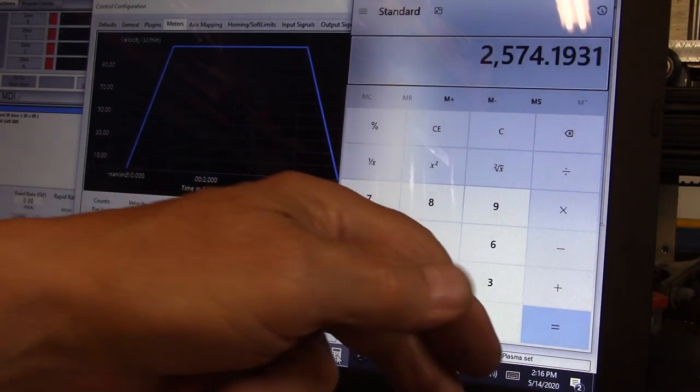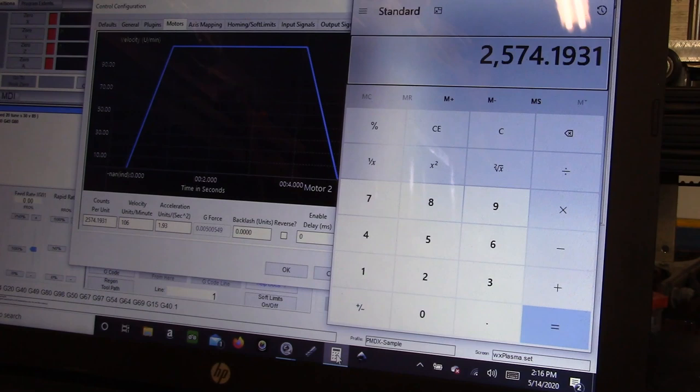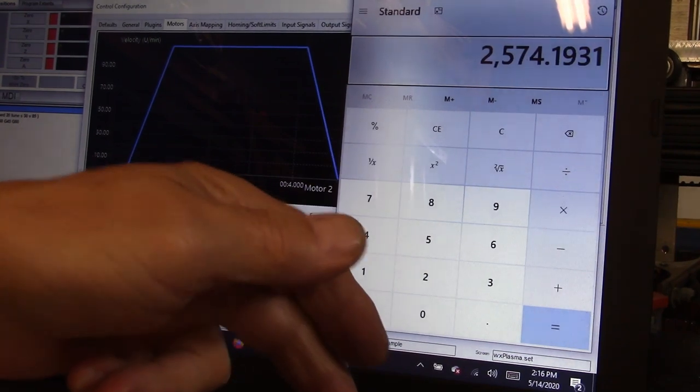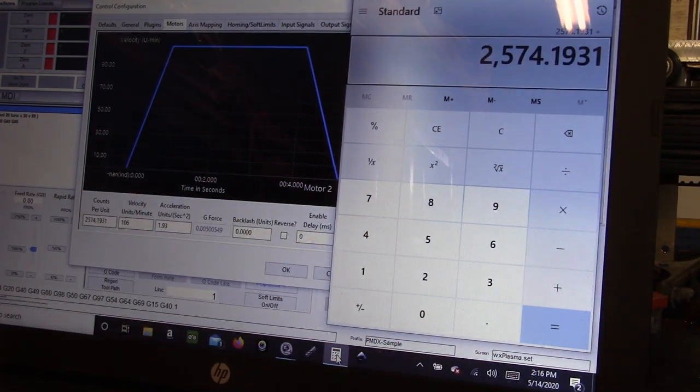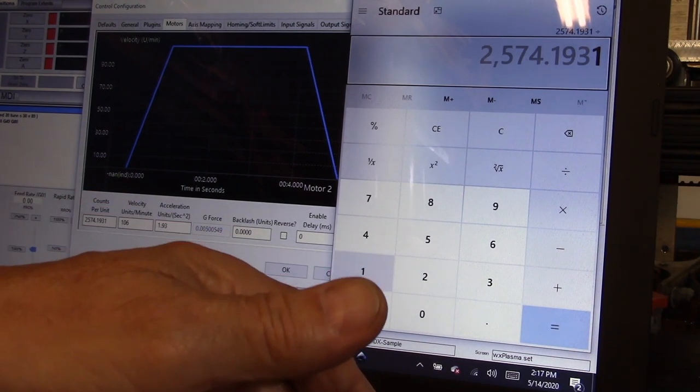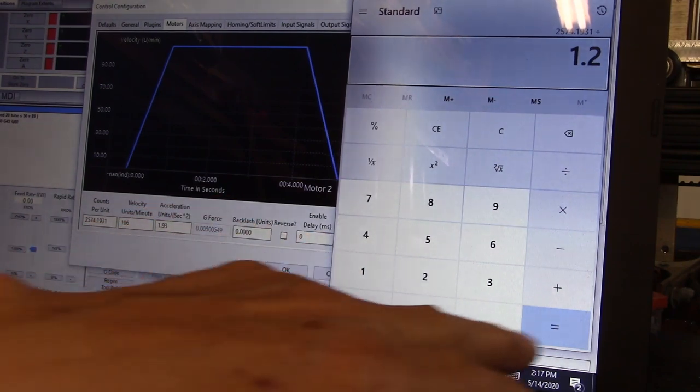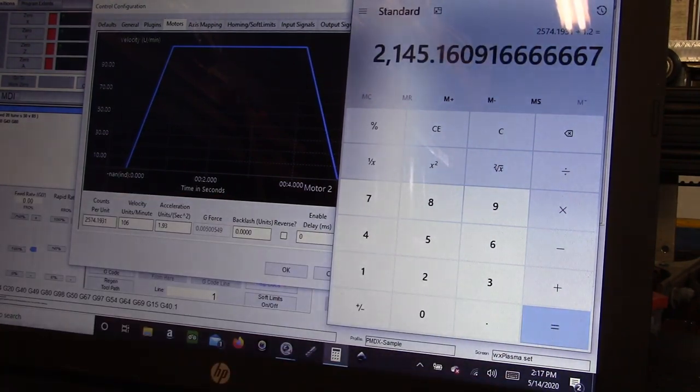Times one inch, so that of course is our answer there. And we want to divide that by the actual distance, so we go ahead and divide by 1.2 inches. And that will equal the new tuning is 2145.1609.